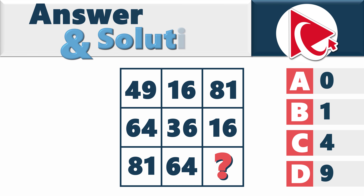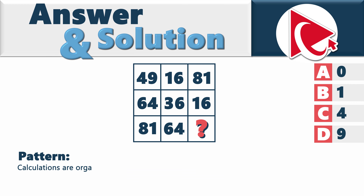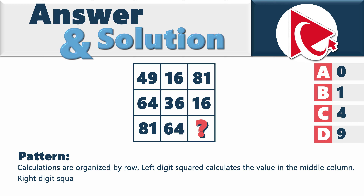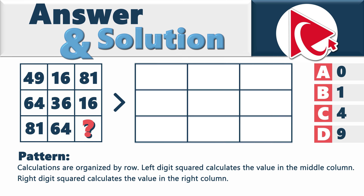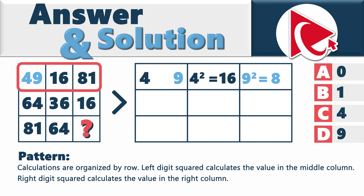To solve this challenge, we need to understand the pattern. The pattern here is that calculations are organized by rows. Digits in the left column are used to calculate the values in the middle and right columns. The number in the upper left corner is 49. We use the two digits from 49 — 4 and 9 — separately, then we square them. 4 squared equals 16, which is the value in the middle column, and 9 squared equals 81, which is the number in the right column.